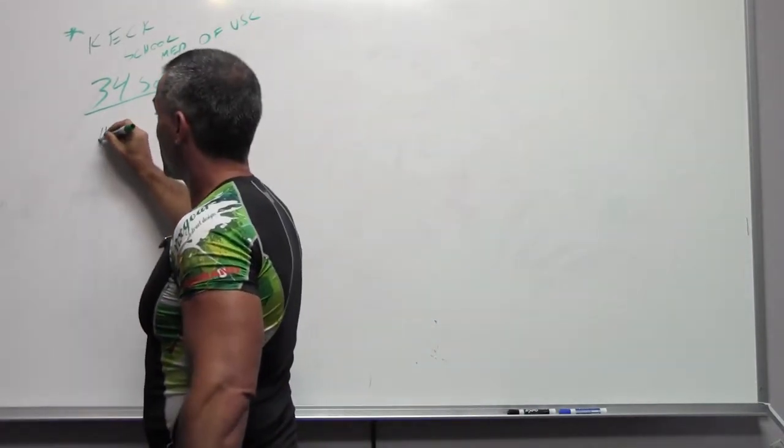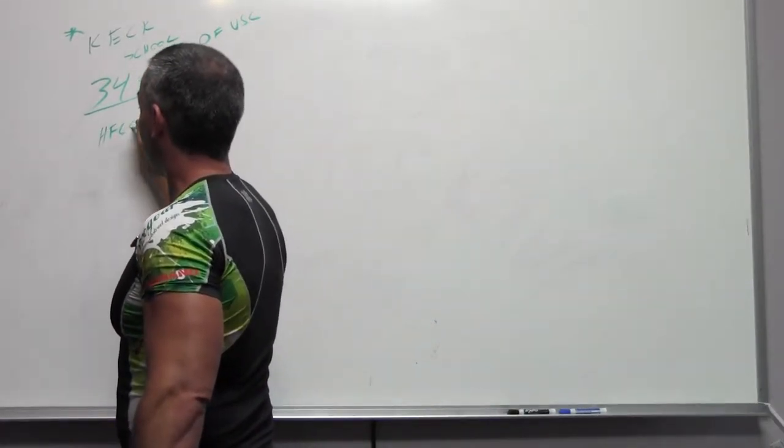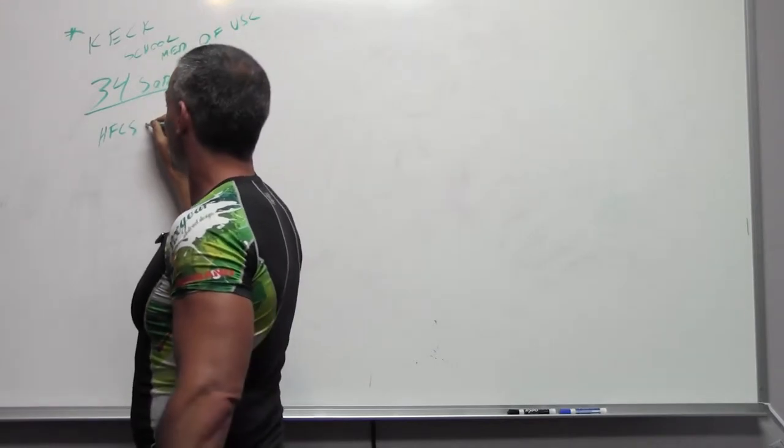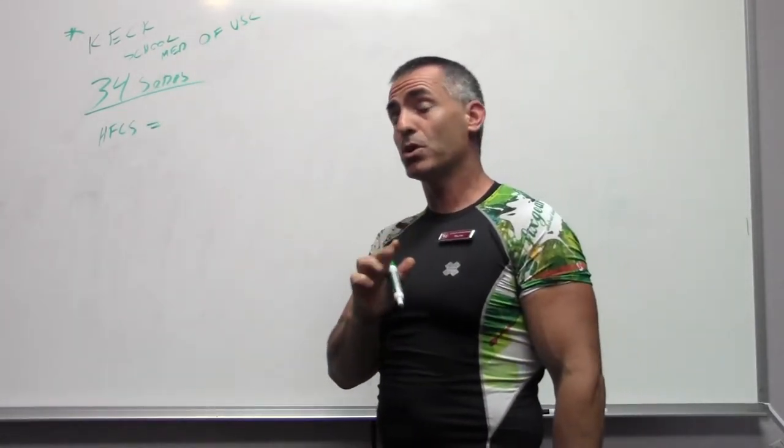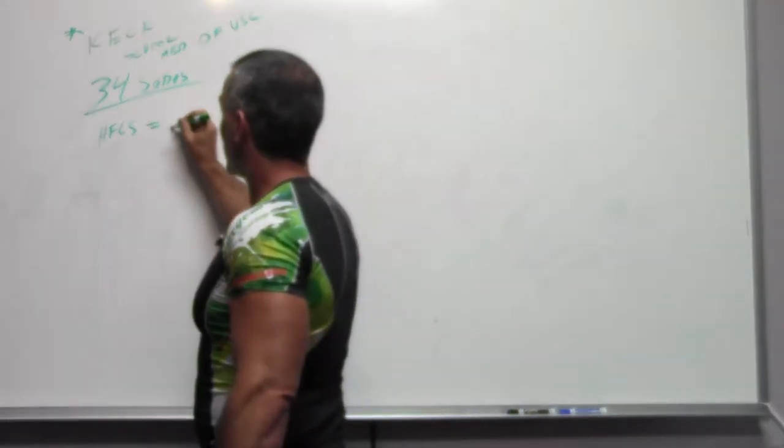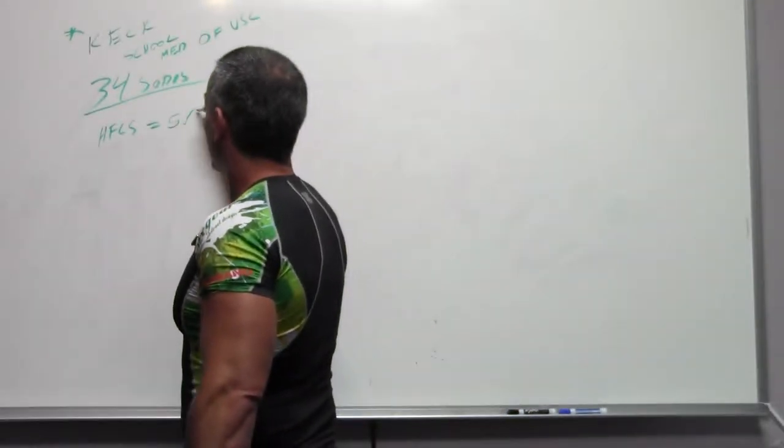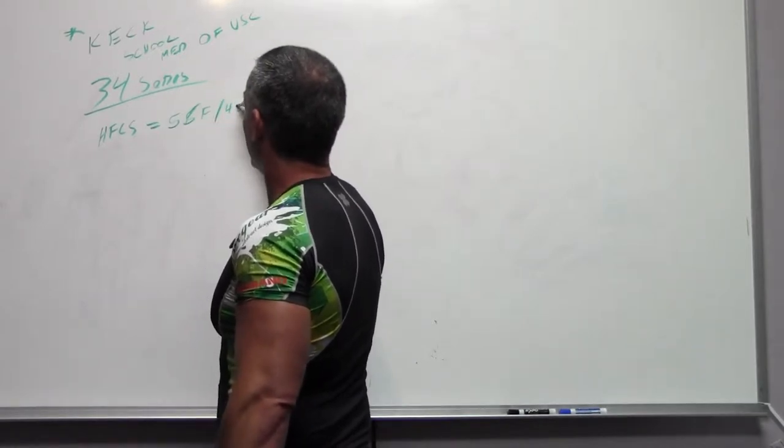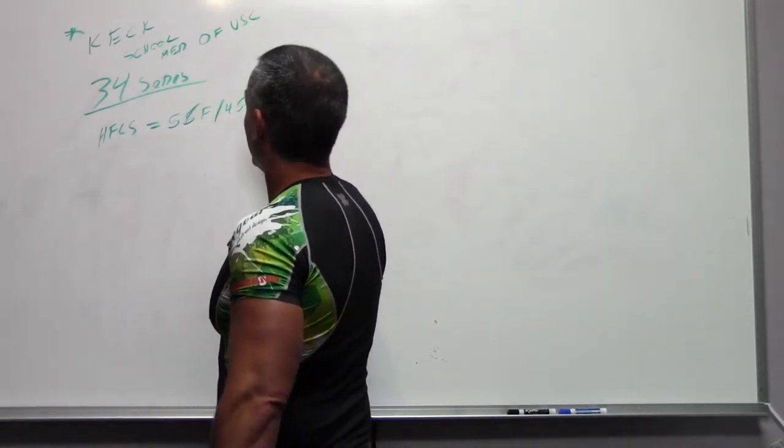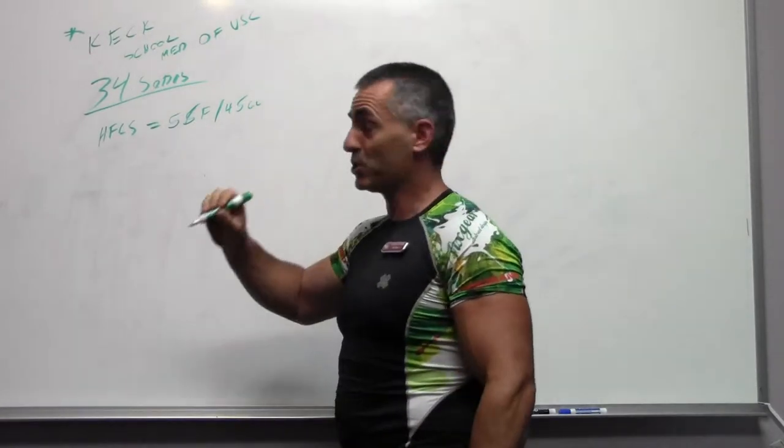When they looked at these sodas for high fructose corn syrup, what they're trying to claim is the other sugar. High fructose corn syrup has a fructose to glucose ratio, normally 55